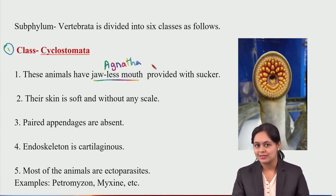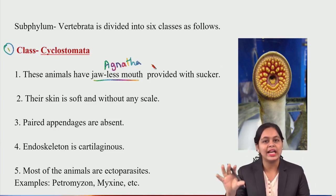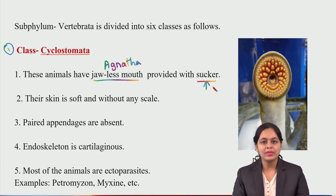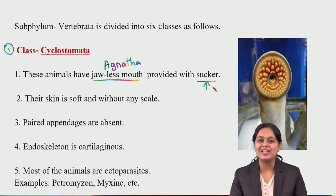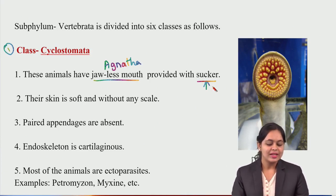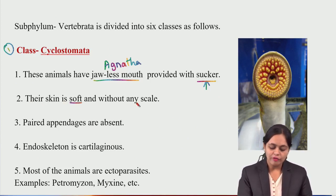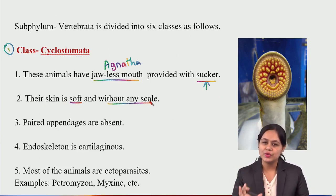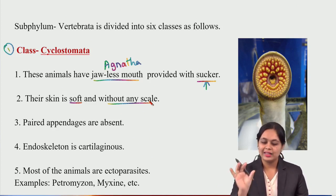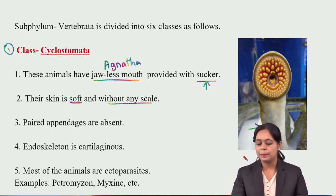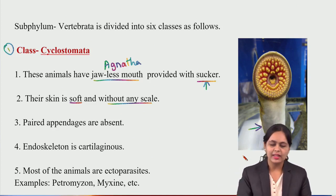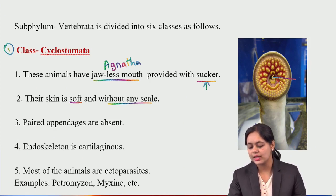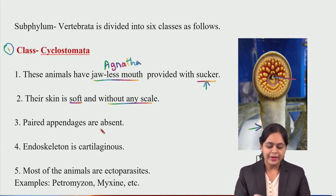Cyclostomata animals are provided with a sucker — these animals suck water or any kind of prey. Because they are jawless, they use sucking to feed. Their skin is soft and without any scales — completely plain body, unlike fish or snakes that have scales. There is a hole through which they perform sucking.